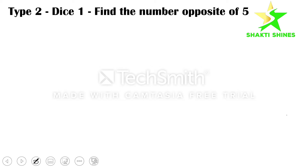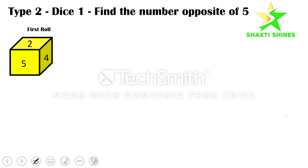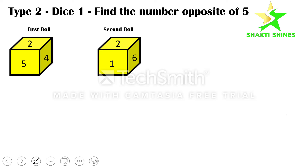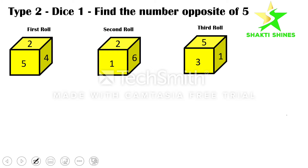Find the number opposite of five. Now let's look at the dice. In the first roll it's showing two, five, four. In the second roll the numbers are two, one, six. In the third roll the numbers are five, three, one.